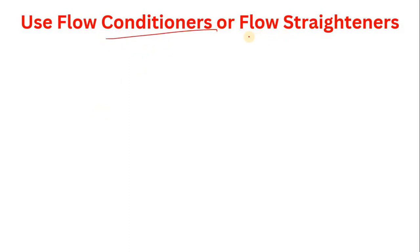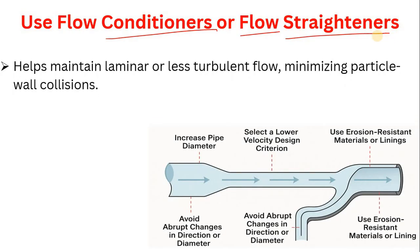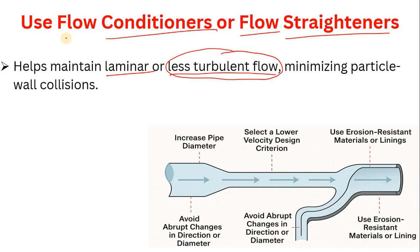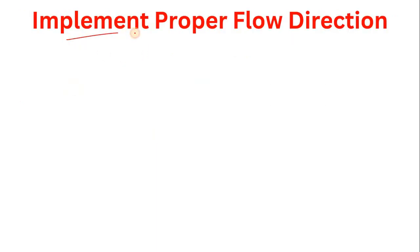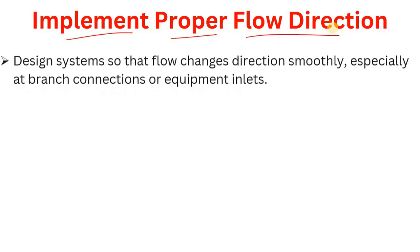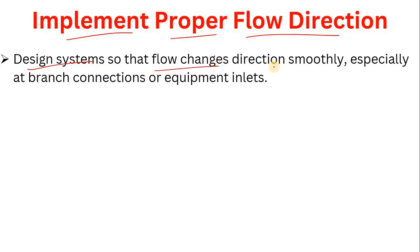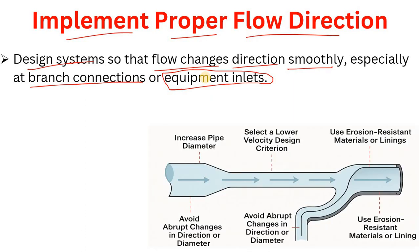The sixth method is to use flow conditioners or flow straighteners. These help maintain laminar or less turbulent flow. If turbulence is high, your fluid velocity approaches the erosional velocity limit. Flow conditioners minimize particle-to-wall collisions. Additionally, implement proper flow directions — design the system so that flow changes direction smoothly, especially at branch connections or equipment inlets, to avoid abrupt flow direction changes that could cause erosion or flow instability.